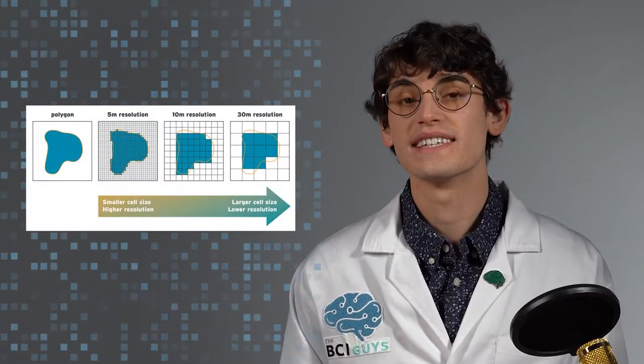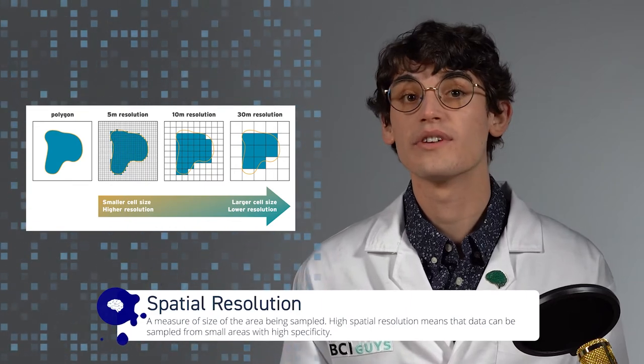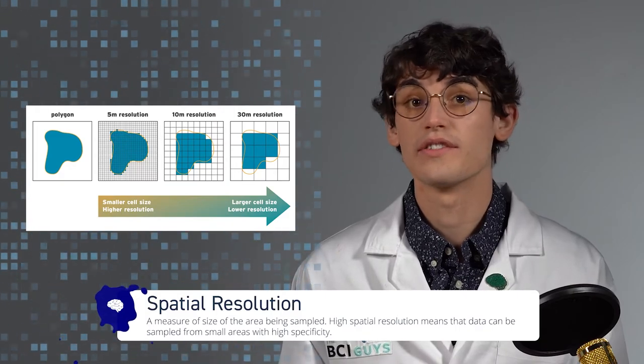One drawback to using EEG is it has low spatial resolution. Spatial resolution refers to the smallest possible area that you can accurately discern data from — it increases as the individual sample area goes down, like the resolution of a computer monitor. EEG signals are scrambled by the skull and several other biological layers. The maximum spatial resolution of EEG is about 6 to 8 centimeters squared, about the size of a U.S. half-dollar coin, meaning tens of millions of neurons in the cortex fall within that area. EEGs are excellent at detecting brainwaves and the overall state of the brain, and can offer insight into the wearer's current emotional state.